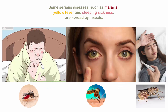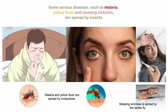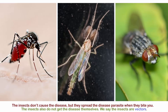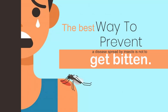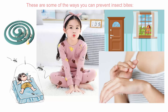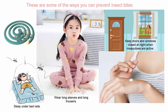Preventing insect bites: some serious diseases such as malaria, yellow fever and sleeping sickness are spread by insects. Malaria and yellow fever are spread by mosquitoes; sleeping sickness is spread by the tsetse fly. The insects don't cause the disease, but they spread the disease parasite when they bite you. The insects also do not get the disease themselves — we say the insects are vectors. The best way to prevent a disease spread by insects is not to get bitten. Sleep under a bed net, wear long sleeves and long trousers, keep doors and windows closed at night when mosquitoes are active, use insect repellents on your skin, and burn mosquito coils to keep insects away.